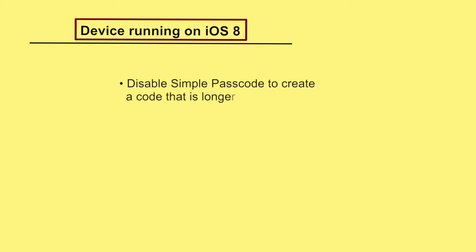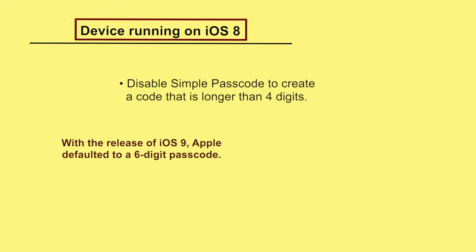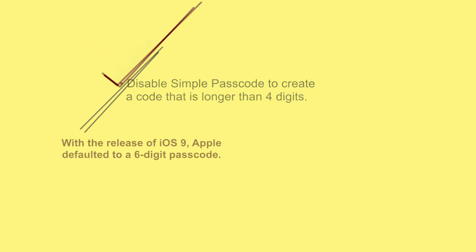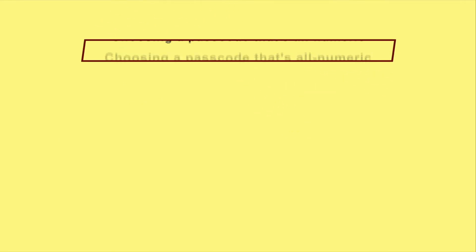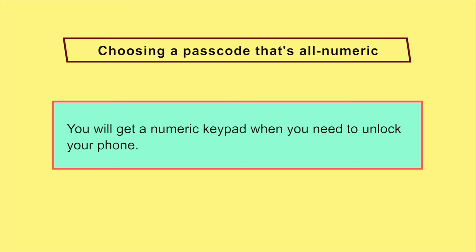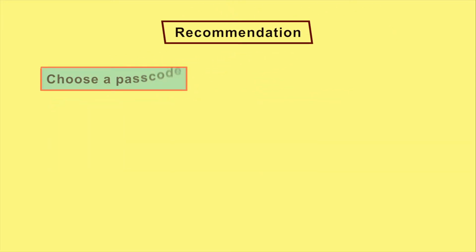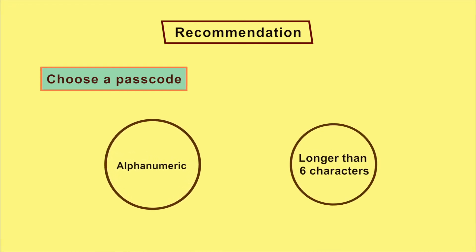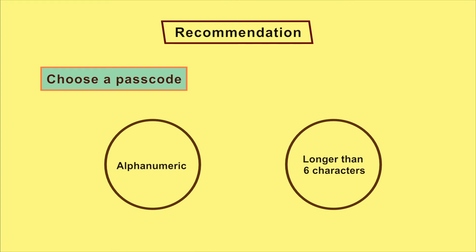If your device is running on iOS 8, disable simple passcode to create a code that is stronger and longer than 4 digits. With the release of iOS 9, Apple defaulted to a 6-digit passcode. If you choose a passcode that's all-numeric, you will get a numeric keypad when you need to unlock your phone, which may be easier than typing a set of letters and symbols on a tiny virtual keyboard.